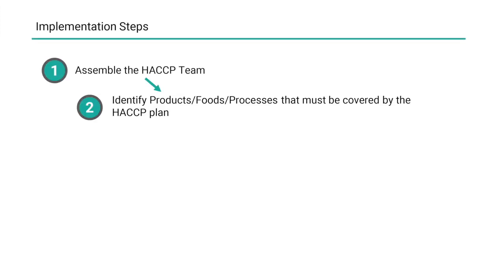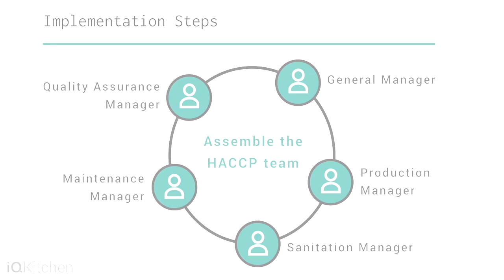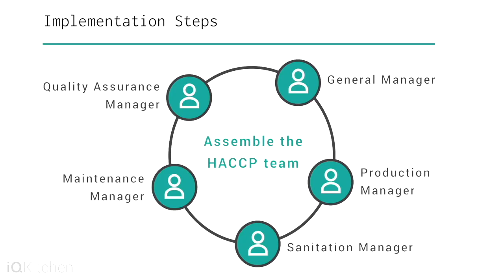The development of a HACCP plan is a logical step-by-step process. Five preliminary tasks need to be accomplished before the application of the HACCP principles to a specific product and process. Task one: assemble the HACCP team. Individuals from areas such as engineering, production, sanitation, quality assurance, and food microbiology who have a working knowledge of the various processing steps and operations in the facility will be responsible for the HACCP plan.